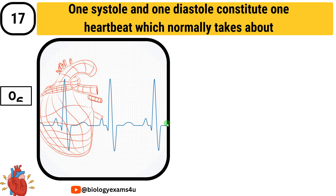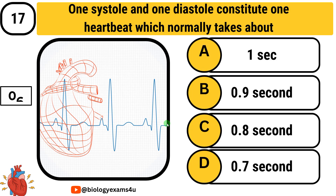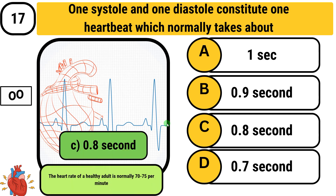Question number 17: One systole and one diastole constitute one heartbeat, which normally takes about — Option A: one second. Option B: 0.9 second. Option C: 0.8 second. Option D: 0.7 second. The answer is 0.8 second. The heart rate of an adult is normally 70 to 75 heartbeats per minute.